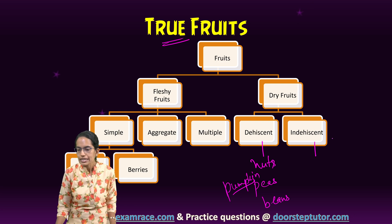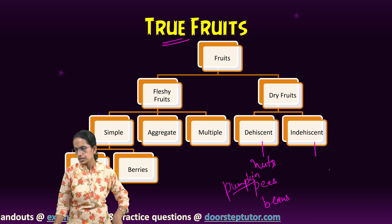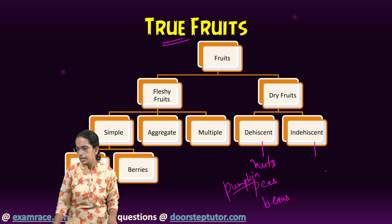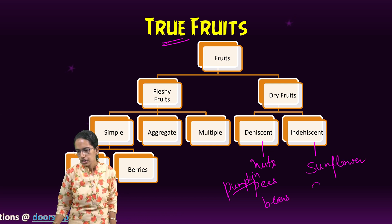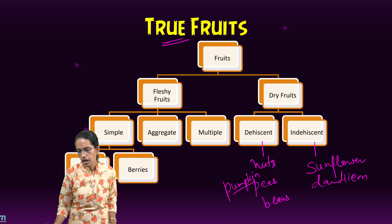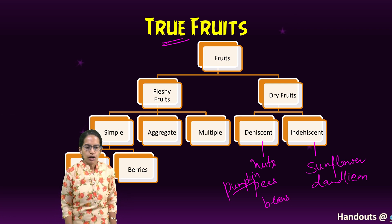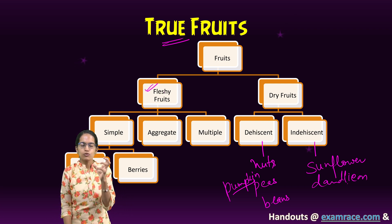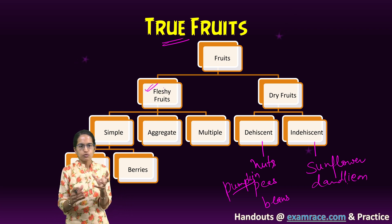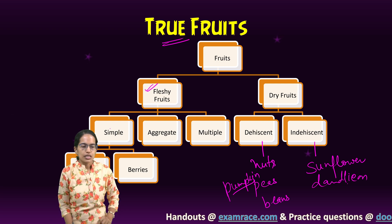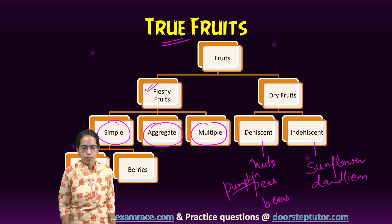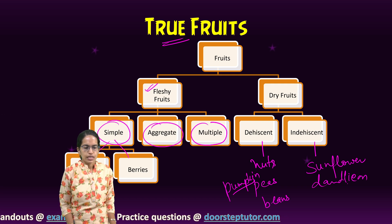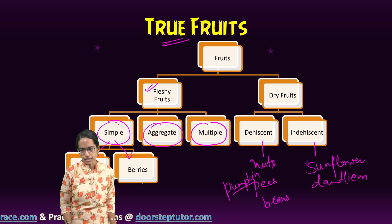When it comes to indehiscent dry fruits, sunflower and dandelion are good examples — there is no such covering over them. Coming on to fleshy fruits: fleshy fruits are those fruits which have the pulp. These could be simple, aggregate, or multiple. Simple fleshy fruits can be further classified as drupes and berries.